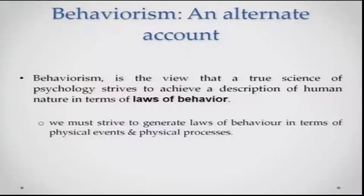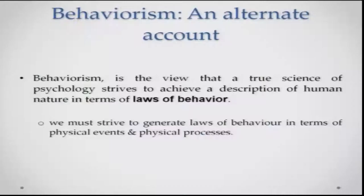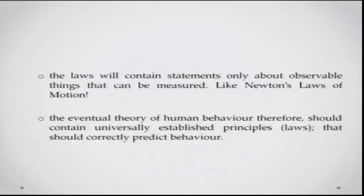Let us try and understand behaviorism in a bit more detail today. Behaviorism is basically the view that a true science of psychology strives to achieve a description of human nature in terms of laws of behavior — simply like, for example, you have laws of gravity or laws of action-reaction. The idea in behaviorism is that we must strive to generate laws of behavior in terms of physical events and physical processes. These laws basically will contain statements only about observable things. You can make a law about only things that you can see and measure — only then will you be able to reliably predict everything, or so is the belief.